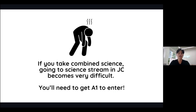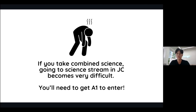Should you choose to take combined science, be well warned that going for a science stream in JC will be a lot more difficult, as many JCs have a requirement that you must score A1 for combined science to enter a science stream. So my advice is: take triple science only if you're planning to use all three sciences in your L1R5. Otherwise, taking double science is probably the most strategic choice, and only take combined science if you're sure you're not going to JC science stream, or if you're planning to go to JC art stream or polytechnic.